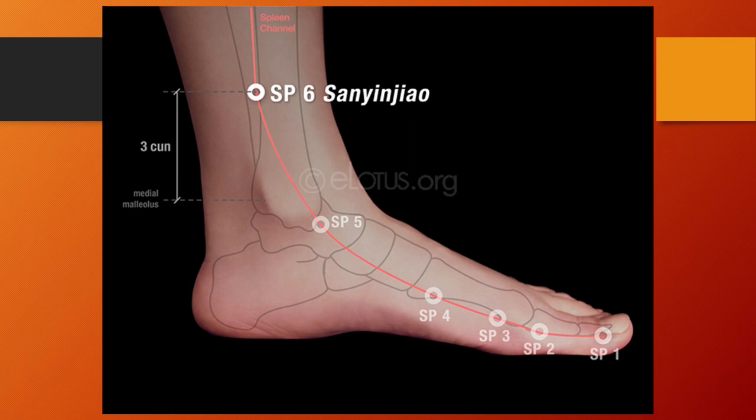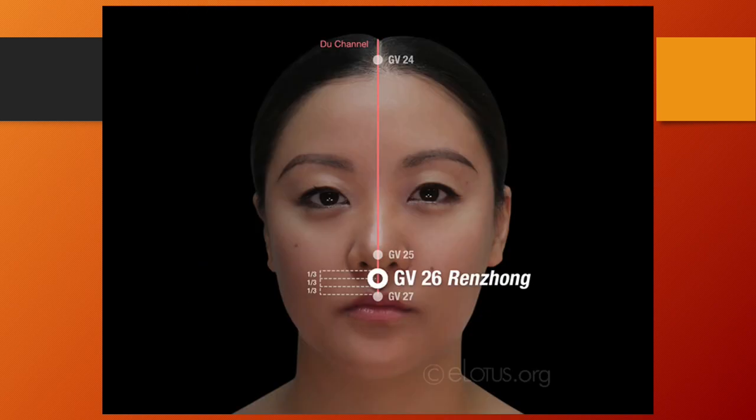Spleen 6 resolves dampness, harmonizes the liver, strengthens the kidneys, nourishes blood and yin, cools and invigorates the blood, benefits urination, and calms the shen. To induce resuscitation, we use GV26 and LI4.